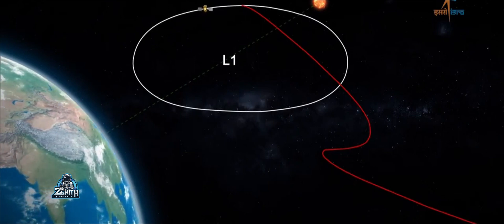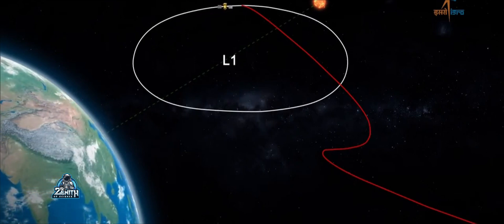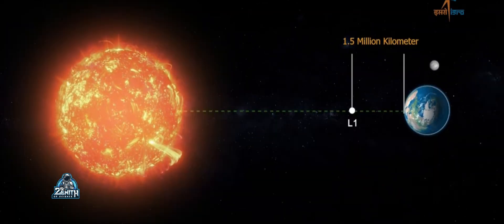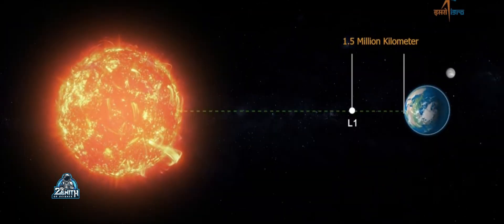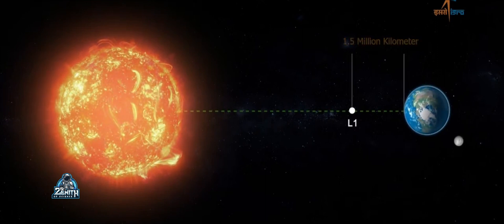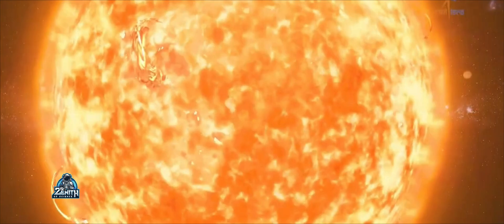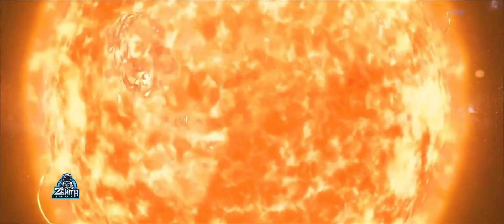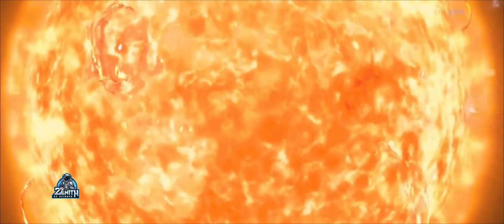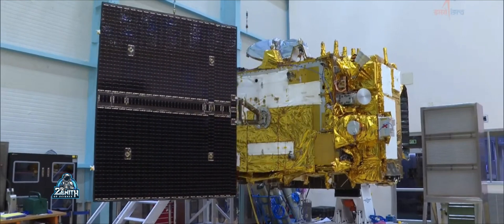The solar wind is coming to the L1 point. So we have to watch the L1 point. We have to watch the L1 point from India. This L1 point is where we are — at 1.5 million kilometers. This is the L1 point.